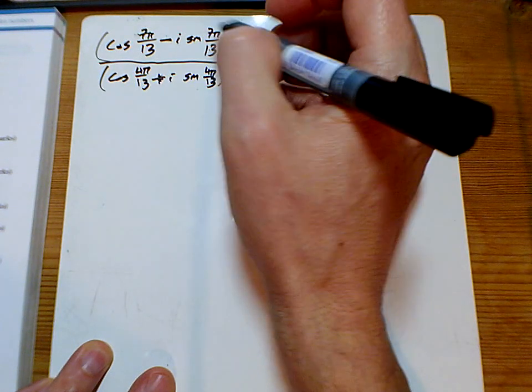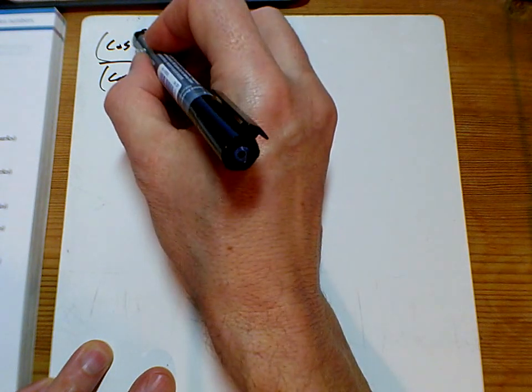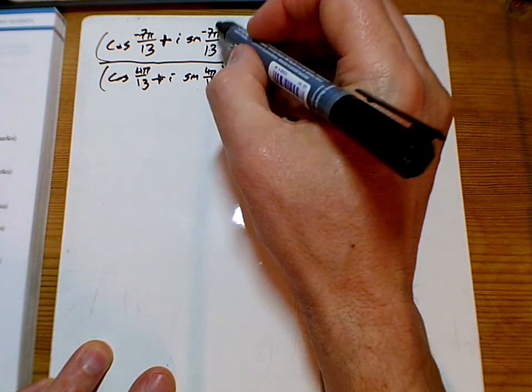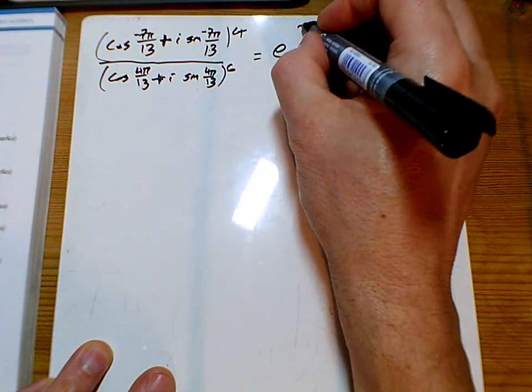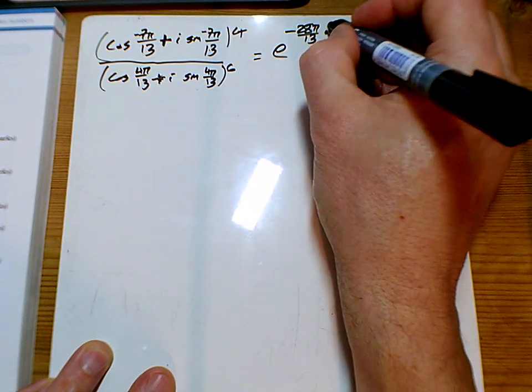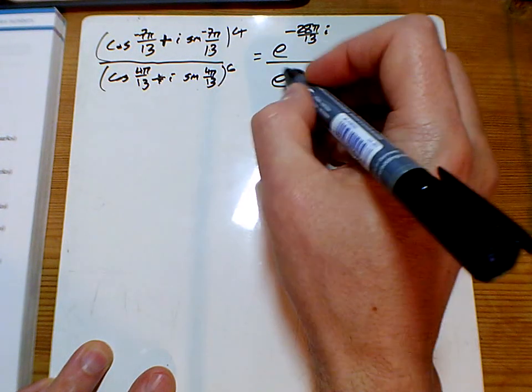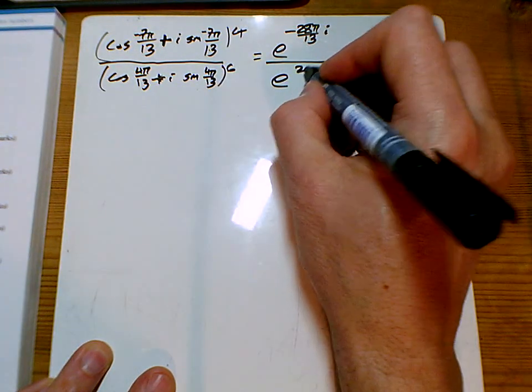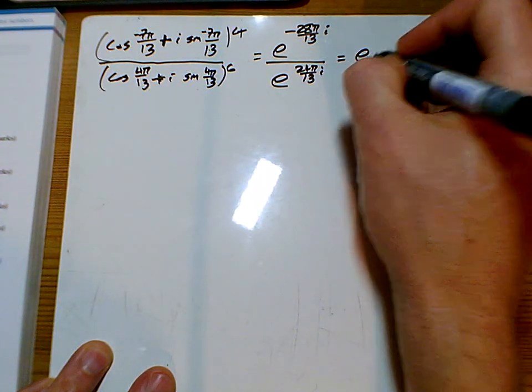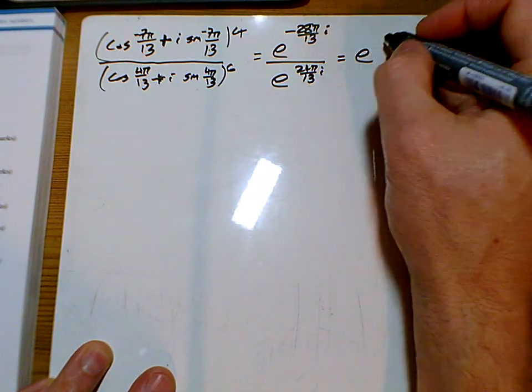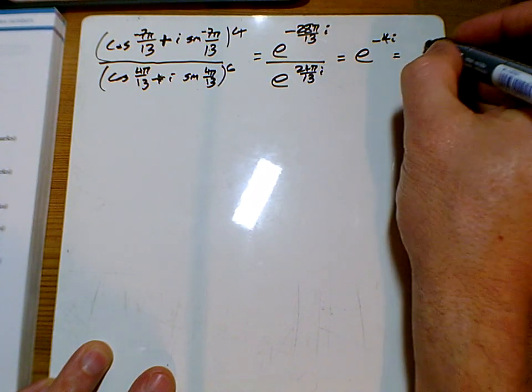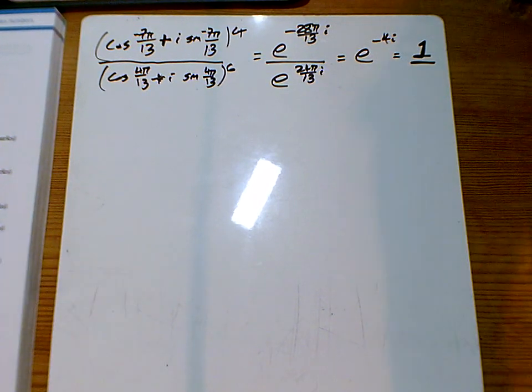Because I've got the minus here, I need to change the angles to minuses and change that to a plus. And so putting that in its exponential form, I'm doing 7 times 4 is 28π over 13, and it's negative i on the top. And the bottom here, I've got 4 times 6, I've got 24π over 13i there. When I take away the powers, I'm getting minus 52 over 13, so minus 4i there. And that's given me an answer of 1 at the end there.